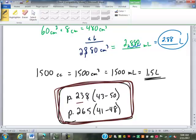So on that packet page 238, 43 to 50, and 265, 41 to 48 deal with conversions and units of capacity.